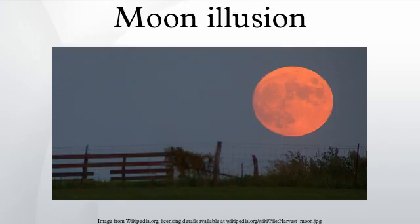The moon illusion is an optical illusion which causes the moon to appear larger near the horizon than it does higher up in the sky. It has been known since ancient times and recorded by various cultures. The explanation of this illusion is still debated.